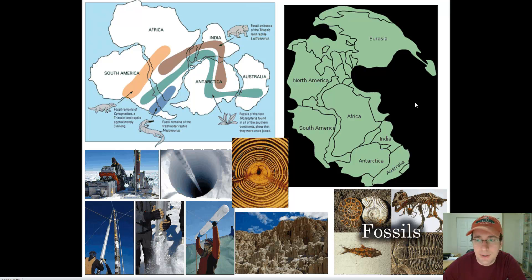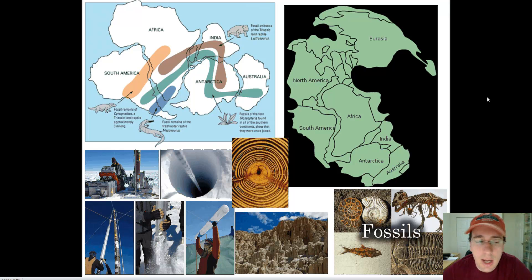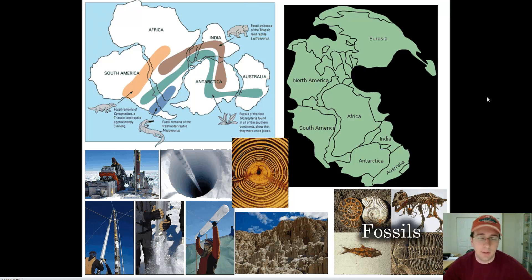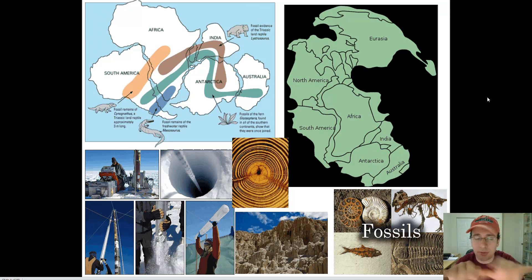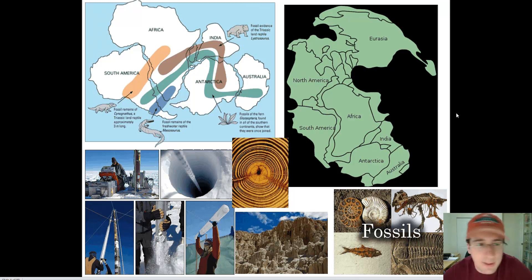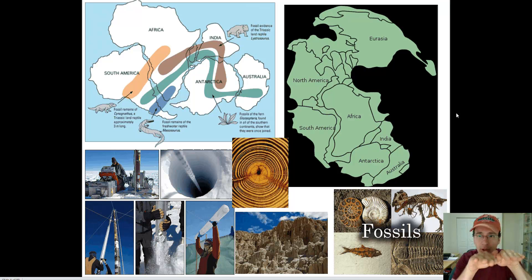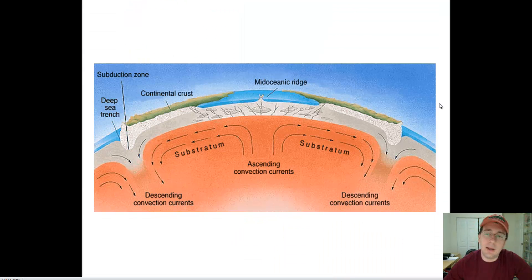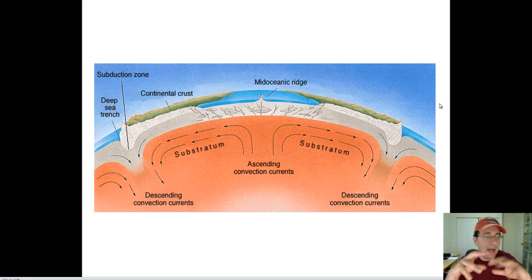Unfortunately, Wegener was missing the mechanism to explain how this happened. He didn't know what could possibly be causing the continents to move. His suggestion that the continents were floating in the oceans didn't make sense to most scientists, since land is much denser than ocean water. But he was not far off — now we understand that the tectonic plates are floating in an ocean of magma, and that molten lava underneath the crust moves the continents with it as it flows.